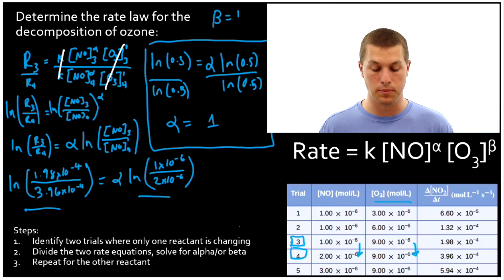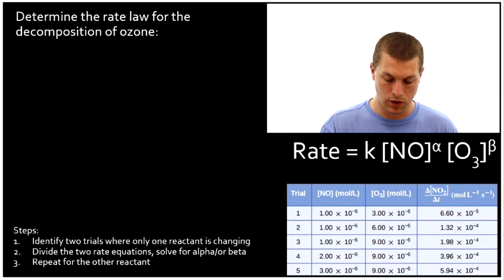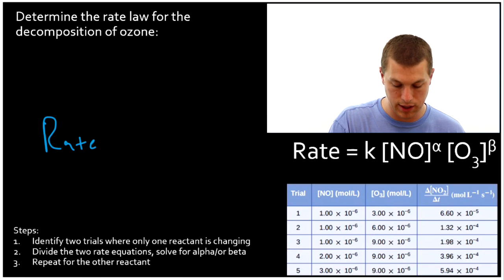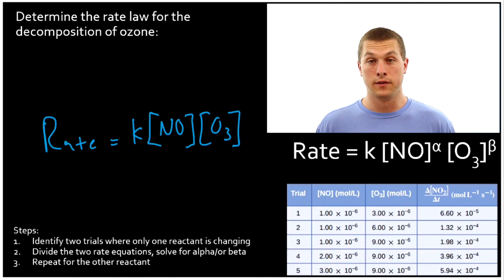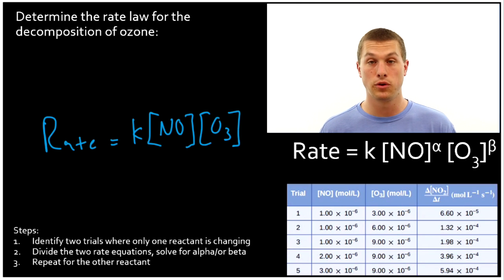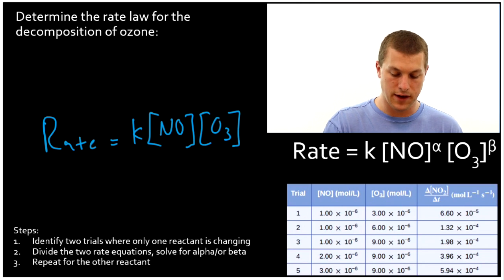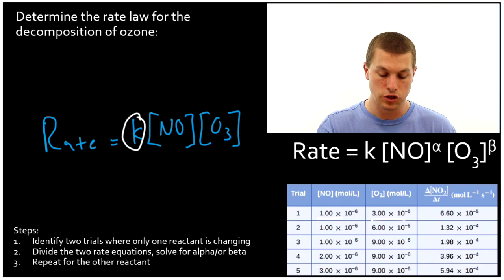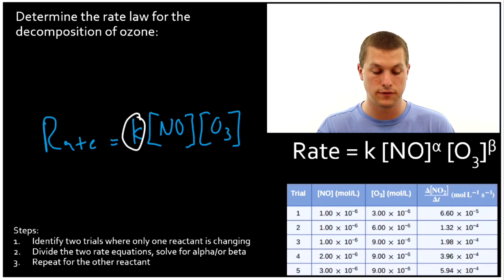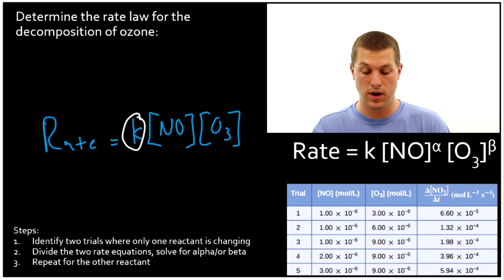Now we've solved for both alpha and beta. The final rate law is: rate = K × [NO] × [O₃], both to the first power. That's a somewhat simple result, but now we know the full rate law. And if we want to find K, we just pick one trial's NO value, O₃ value, and rate, and calculate it. So from multiple trials and the method of initial rates, we can determine the complete rate law and the rate constant.